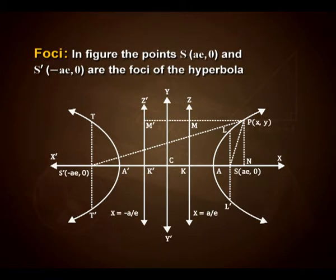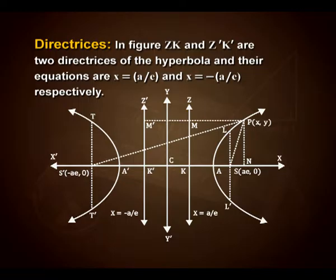Foci: the points S(ae, 0) and S'(−ae, 0) are the foci of the hyperbola. Directrix: ZK and Z'K' are two directrices of the hyperbola, with equations x = a/e and x = −a/e respectively.